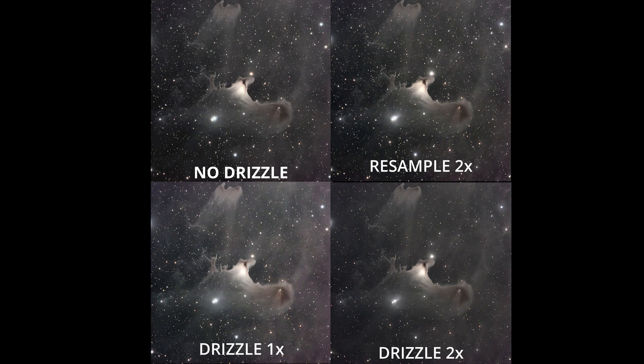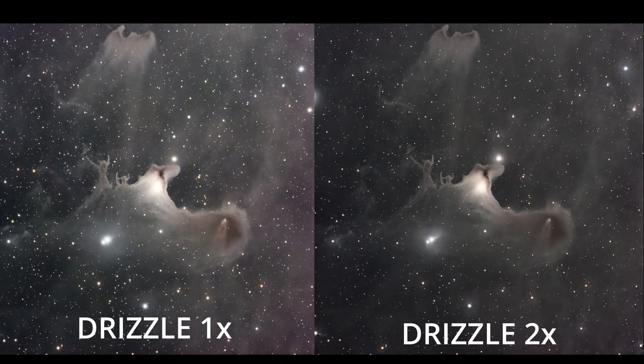If the image was processed well, it's going to benefit from drizzling. None of these images are fully finished — there's a good dozen more steps I would do in actual development. I did minimal development to compare apples to apples as much as possible. As development continues, the drizzled image will see even more improvement compared to the non-drizzled one. Check the description for the link to the finished AstroBin image.